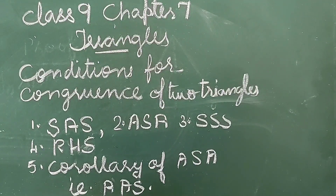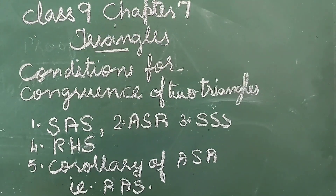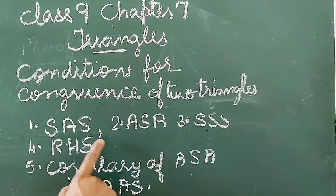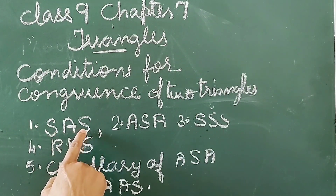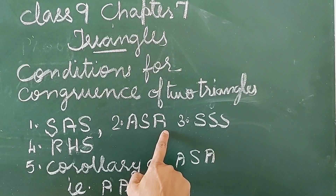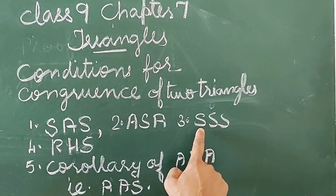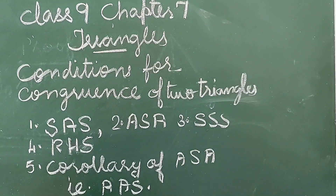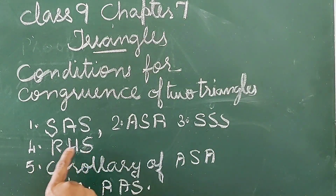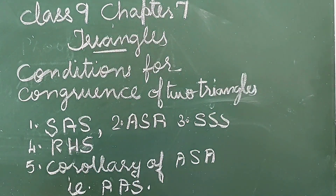Class 9 Chapter 7 Triangles: Conditions for Congruence of Two Triangles. We know there are four conditions: Side Angle Side (SAS), Angle Side Angle (ASA), Side Side Side (SSS), and RHS — that is Right angle, Hypotenuse, and one of the sides. There is a corollary also, that is AAS.